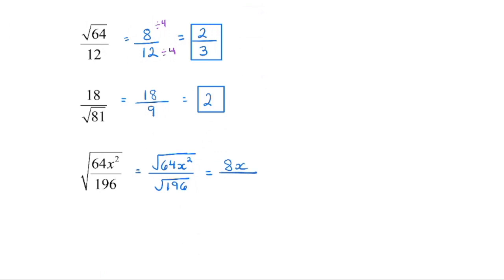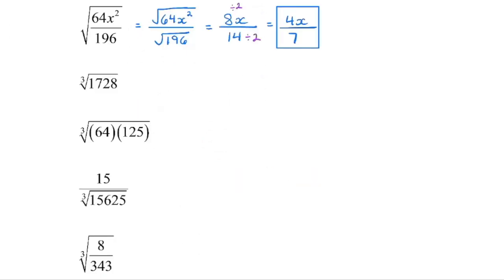The square root of 196, that's also a perfect square, it is 14. Both 8 and 14 are divisible by 2, so 8 divided by 2 is 4. We still have an x in the numerator, 14 divided by 2 is 7. You can enter the cubed root of 1728 into your calculator. It is a perfect cube, so we'll get a value of 12. And then again, both of these are perfect cubes, so we know that the cubed root of 64 is 4, the cubed root of 125 is 5. So then we can multiply those together and we end up with a value of 20.